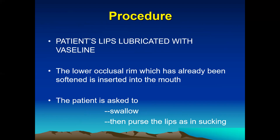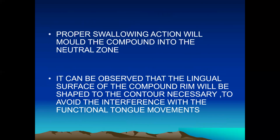For the procedure, first the patient's lips are lubricated with Vaseline. Then the lower occlusal rim, which has already been softened, is inserted into the mouth. The patient is asked to do various functional movements such as swallowing and pursing the lips as in sucking. Proper swallowing action will mold the impression compound into the neutral zone. In this technique we use the different actions of the lips, cheeks, as well as the tongue. It can be observed that the lingual surface of the impression compound rim will be shaped to the contour necessary to avoid interference with functional tongue movements.